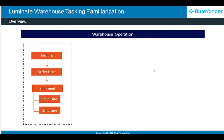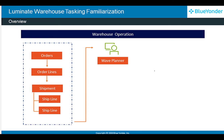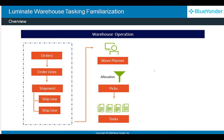In a warehouse, when orders, order lines, shipments, and shipment lines are created, the wave planners plan the wave. Once the wave planner allocates the task, picks are generated as tasks based on the configuration.